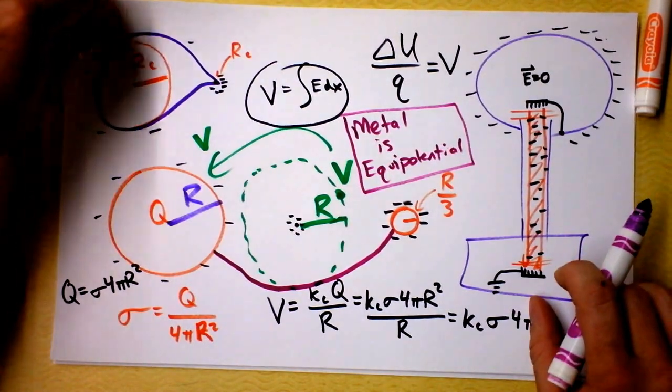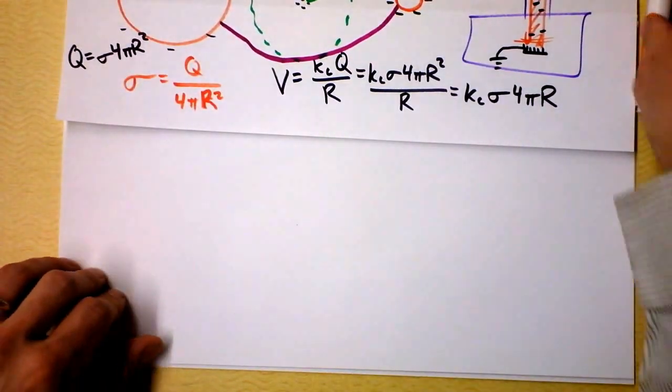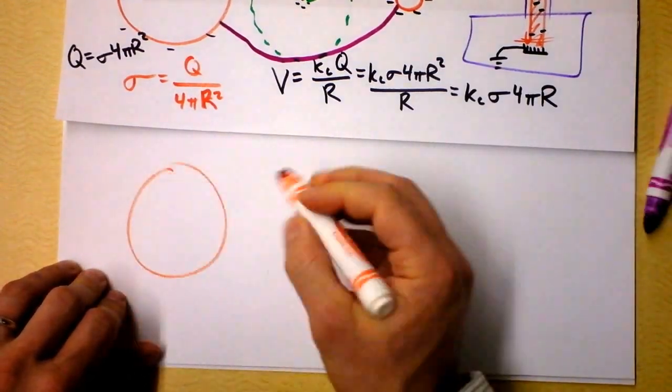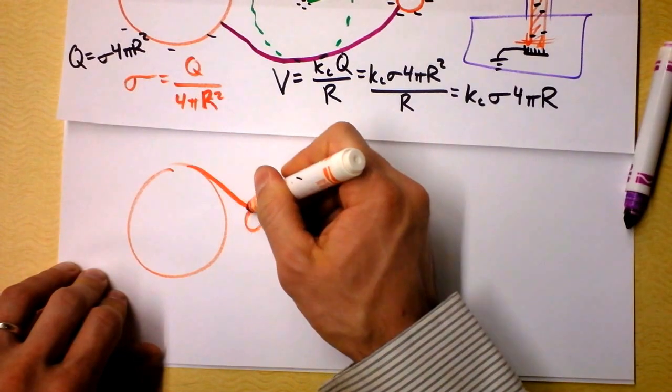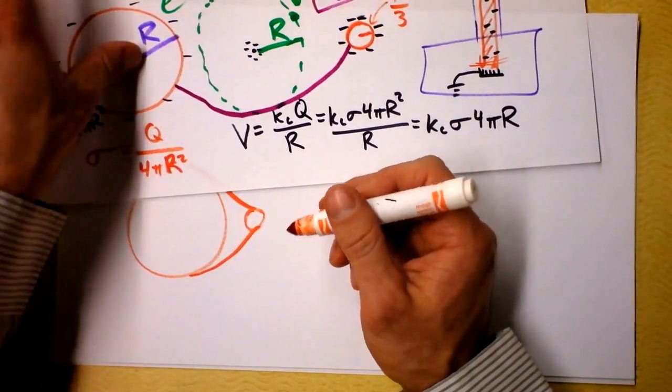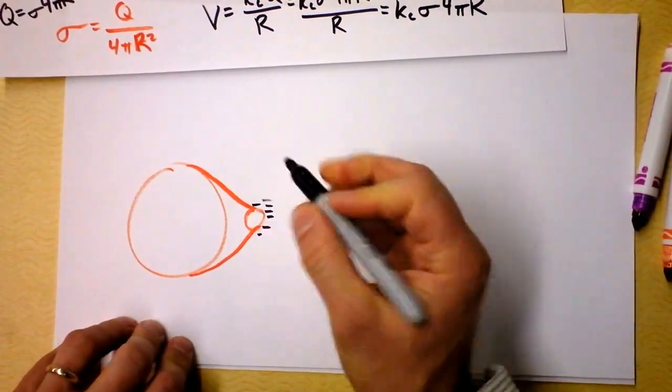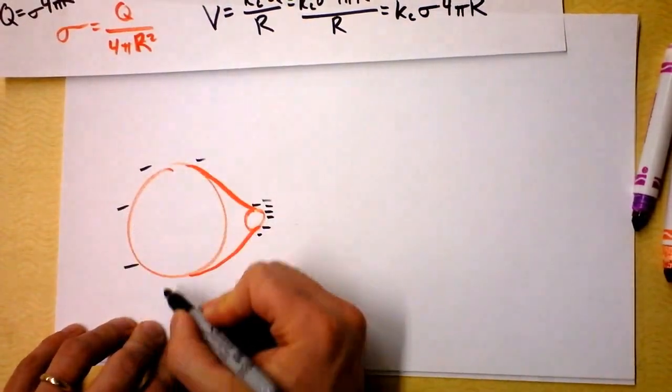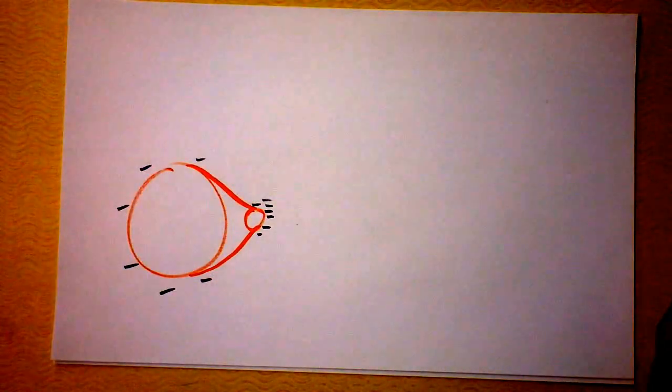That leads me to the really natural statement then that I could draw this sphere large and this sphere small and like wrap metal around them and everything would be fine. No charges would move. There'd still be a really high density of charges over here and a really low density of charges over there. And that's why charges like the pointy bits.